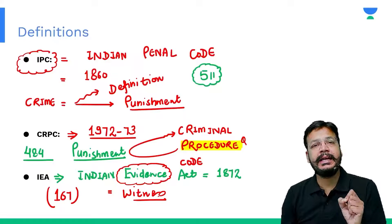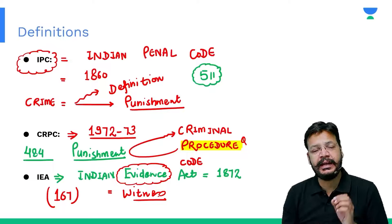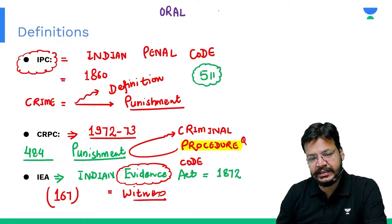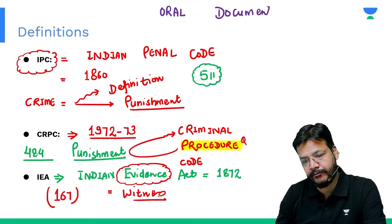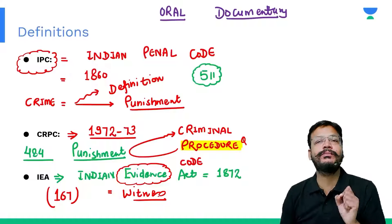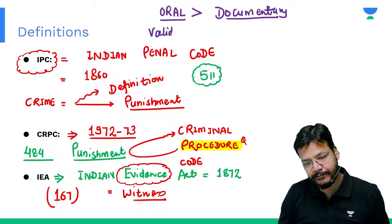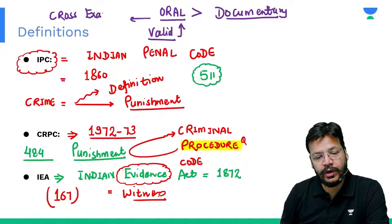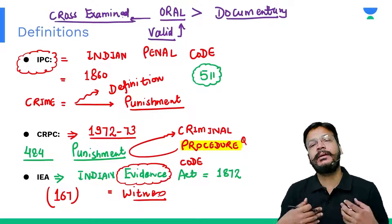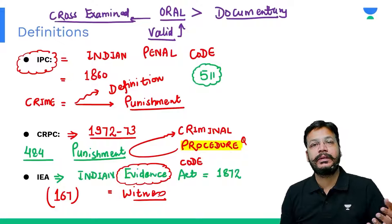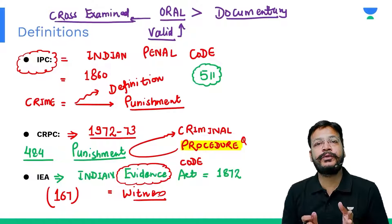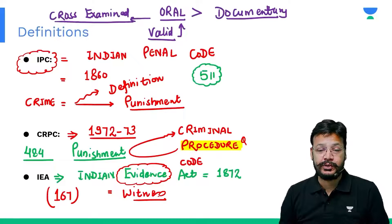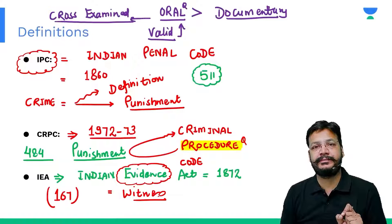IEA, the Indian Evidence Act, is related with witnesses and evidences. Now, if you have oral evidence and documentary evidence — two types of evidence, oral or documentary — which is more valid? Oral evidences are more valid compared to documentary. The reason is oral evidences are always cross-examined. Once you attend the court and give oral evidence, you are going to be cross-examined, so the chances of truth are more. Documents can be fake or false and are sometimes not cross-examined. So if you have a question, which evidence is more valid? The answer is oral evidence — it is more valid.